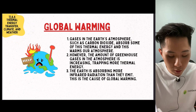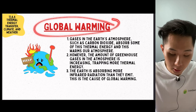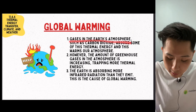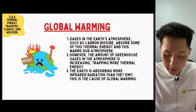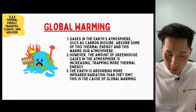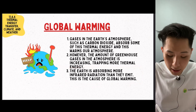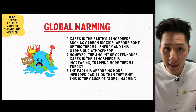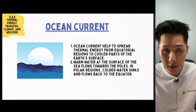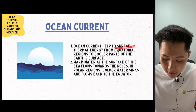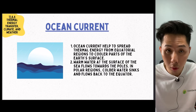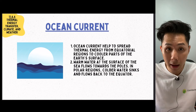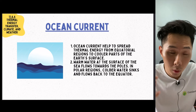Let's look into how thermal energy relates to some global issues, such as global warming. Global warming is caused by the Earth absorbing more infrared radiation than it releases. Gases in the Earth's atmosphere such as carbon dioxide absorb some thermal energy, warming our atmosphere. The amount of greenhouse gases is increasing, trapping more thermal energy. Ocean currents also play a role — water has high specific heat capacity, so it helps spread thermal energy from equatorial regions to cooler parts of the Earth. Warm water at the surface flows toward the poles, and in polar regions, colder water sinks and flows back to the equator.